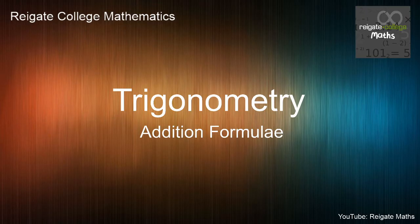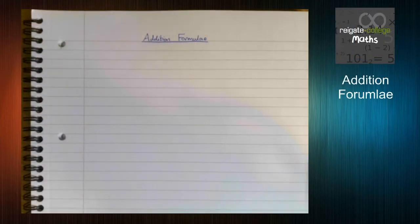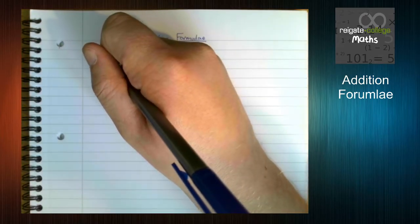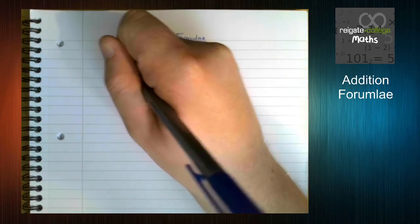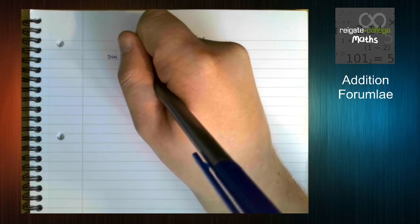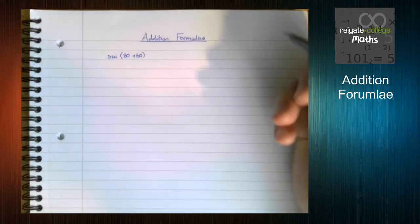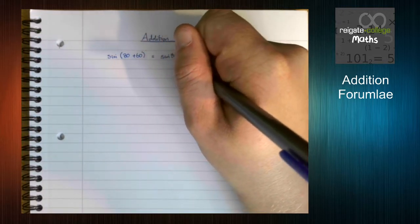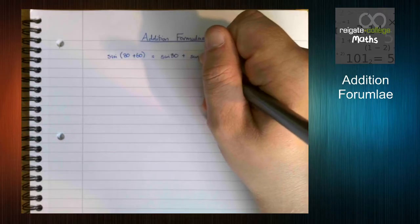Sometimes known as the compound angle formulae, these provide a way to expand trigonometry that you couldn't otherwise do. For instance, a very common misconception is thinking that sine of 30 plus 60 is the same as sine 30 plus sine 60.